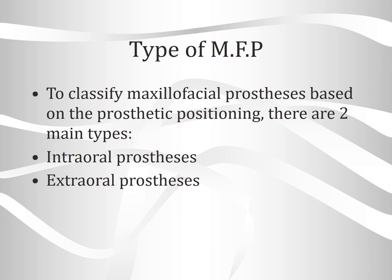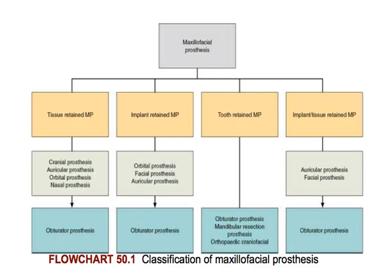Types of maxillofacial prostheses can be classified into two main types based on position: intraoral and extraoral prostheses. As you can see in the chart, it can be divided into four categories: tissue retained, implant retained, tooth retained, or implant/tissue retained.